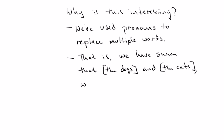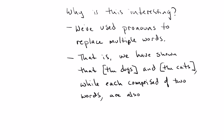We're going to name units like this noun phrases. The particular kind of constituent represented by 'the dogs' and 'the cats' is labeled a noun phrase. 'Dogs' is the head of 'the dogs' — it's a noun, so it's a noun phrase. 'Cats' is the head of 'the cats' — cats is a noun, so it's the head of a noun phrase.